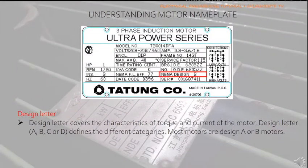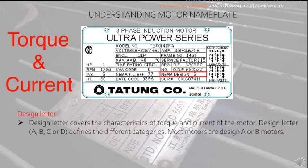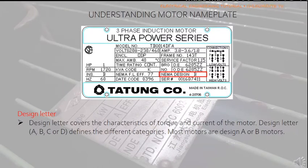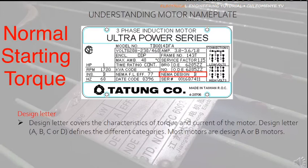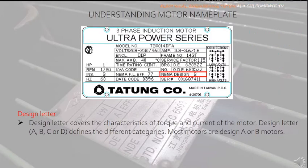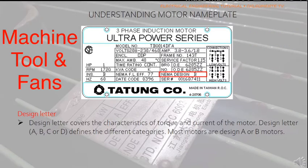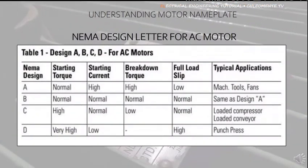Design Letter differs from the code letter — it covers the torque and current characteristics of the motor. Design letters A, B, C, or D define different categories. Most motors are design A or B. In this example, the design letter B means the motor has normal starting torque and starting current, typically applied to machine tools and fans. According to the NEMA table, the farther the design letter from A, the higher the starting torque and the lower the starting current.